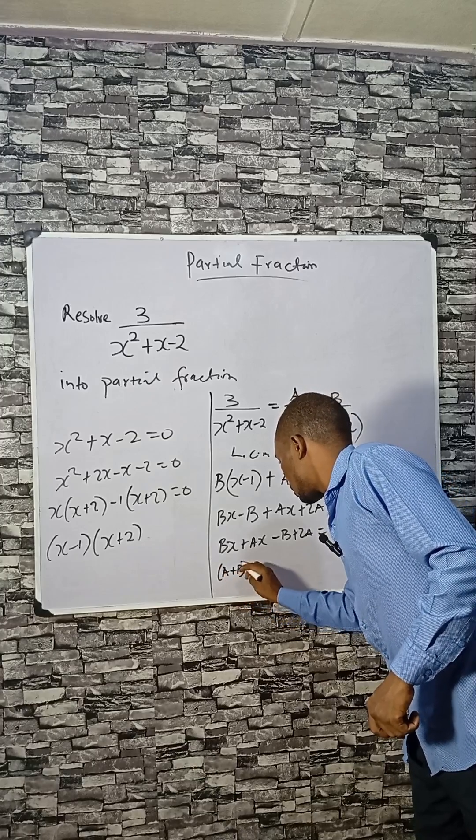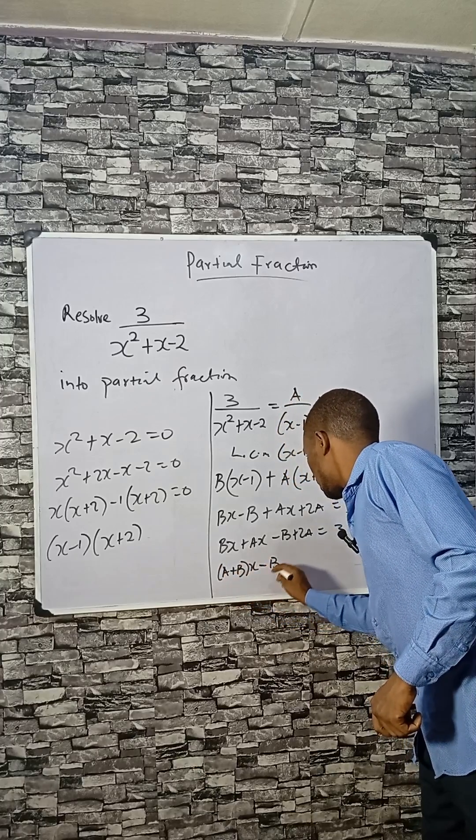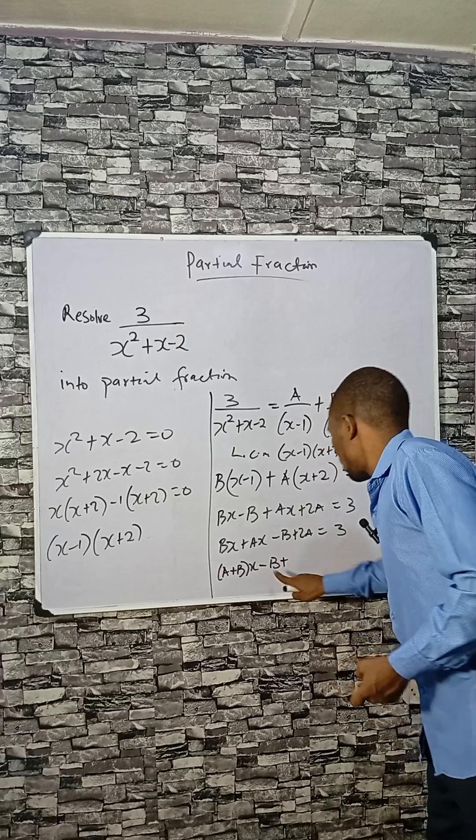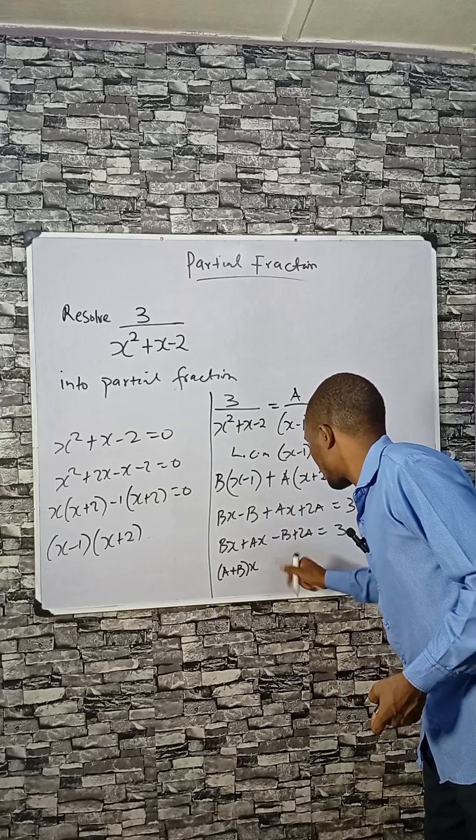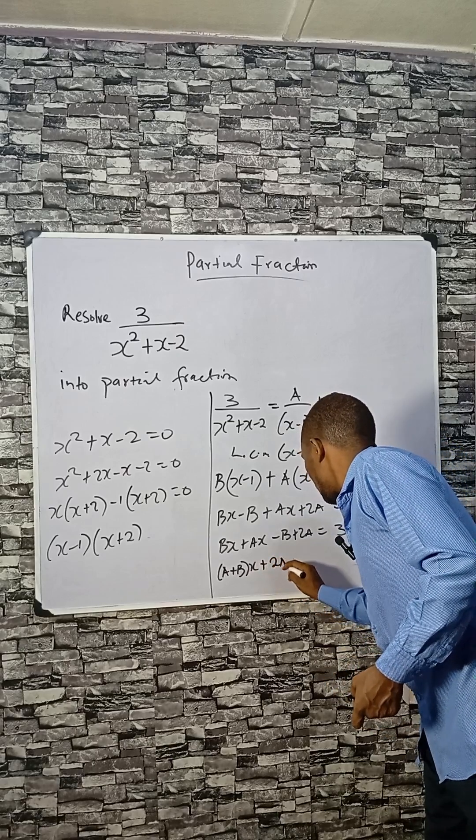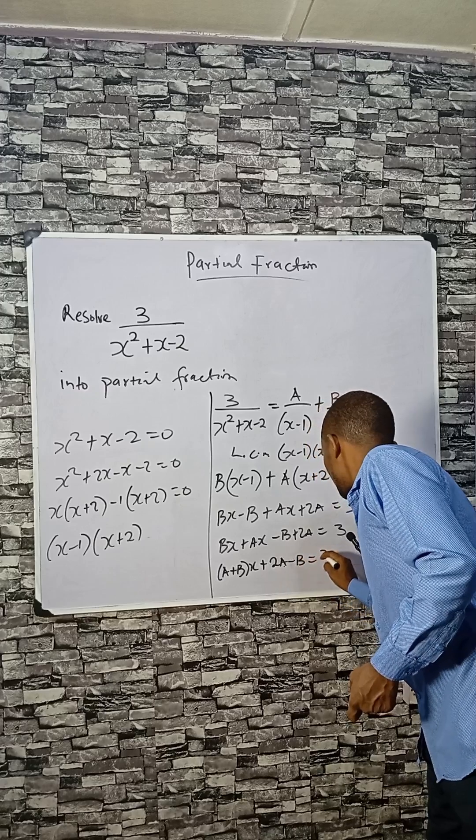That means we have A plus B times x, and then 2A minus B. We can rewrite this as A plus B times x plus 2A minus B equals to 3.